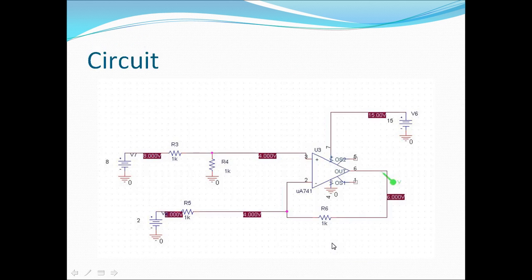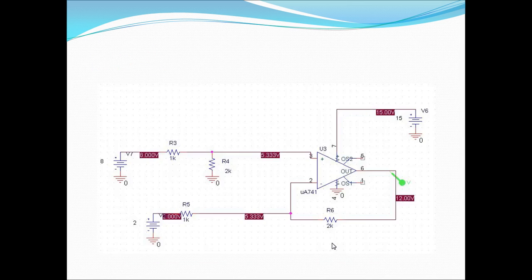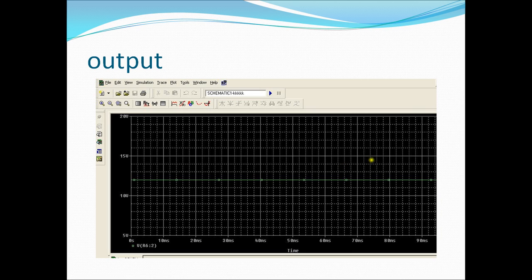So V1 is 2 volts. So 8 minus 2 is 6 into 2, equals 12. So we got output as 12.